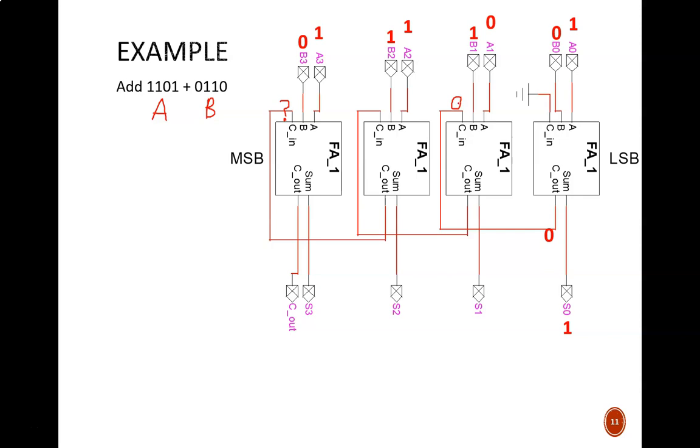Here, we add the input 0 plus 1 plus 0. Again, this gives us 01. The 1 comes down for the final sum. The 0 carries out to the next column.